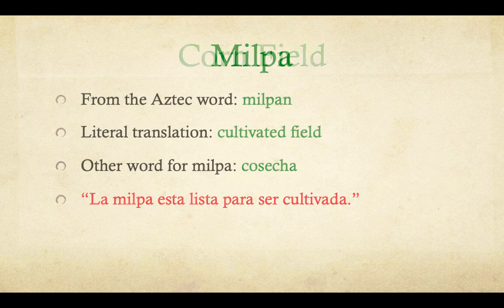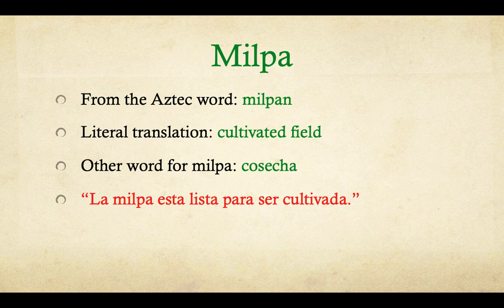Cornfield. 'Milpa.' It likely comes from the Aztec word 'milpan' — though I couldn't isolate that one exactly. The literal translation is 'cultivated field.' Another word for milpa — not exact, but you could say 'cosecha,' meaning a crop. 'Cosechar' is to harvest. Example sentence: 'La milpa está lista para ser cultivada.'